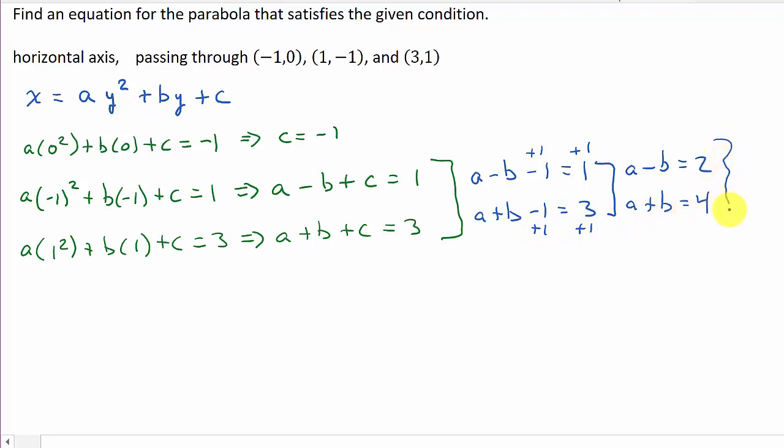And look at this, we've got a system of equations to solve. So I've got a minus b equals 2, a plus b equals 4, and solve it. Use addition method. If I add them, the b's go out, so I get 2a equals 6, a equals 3.